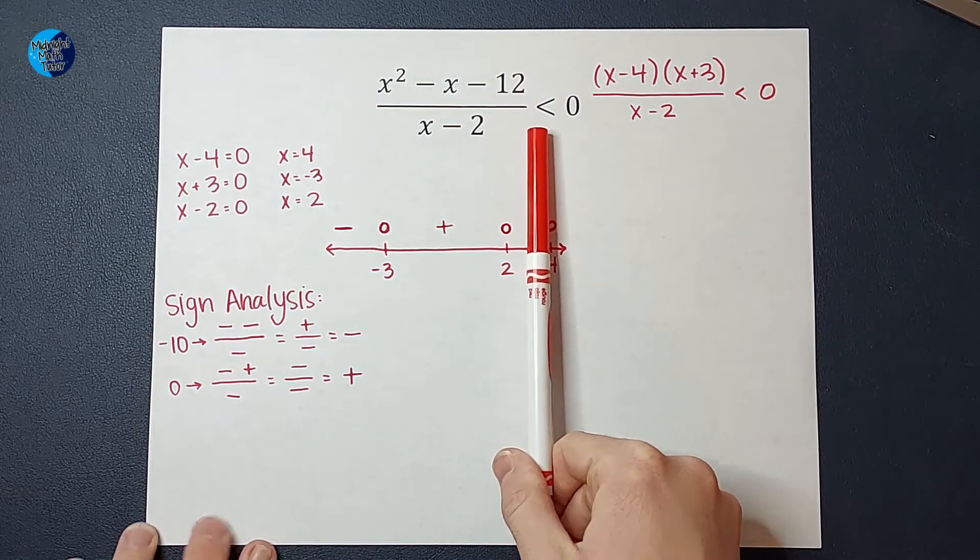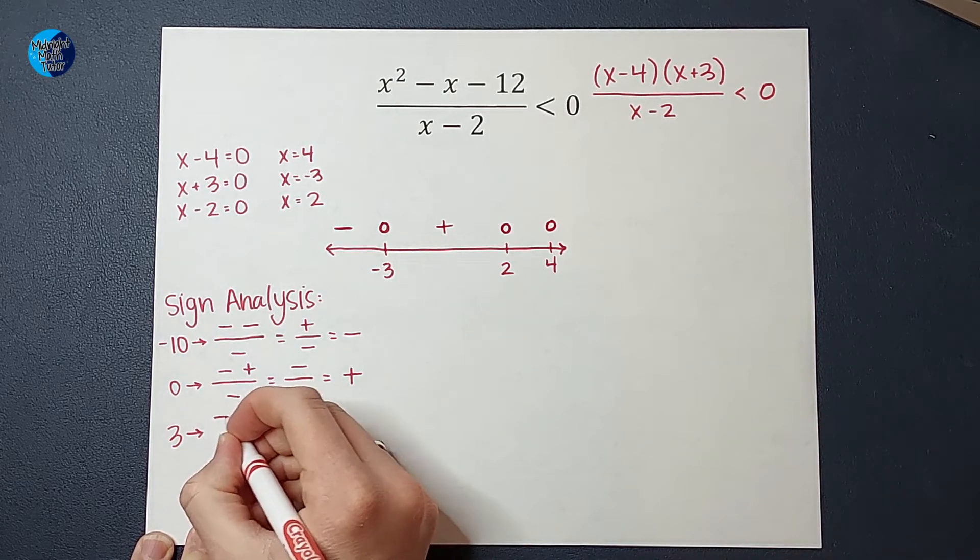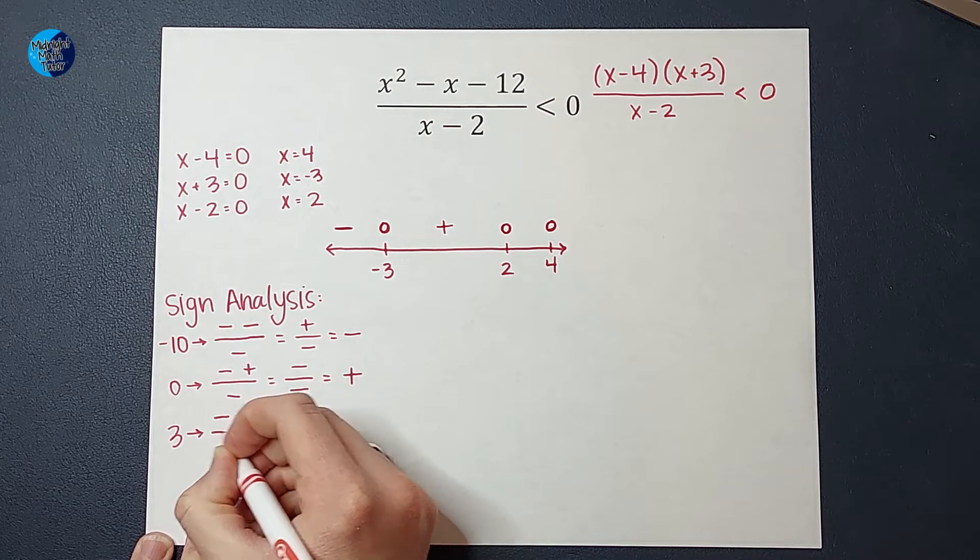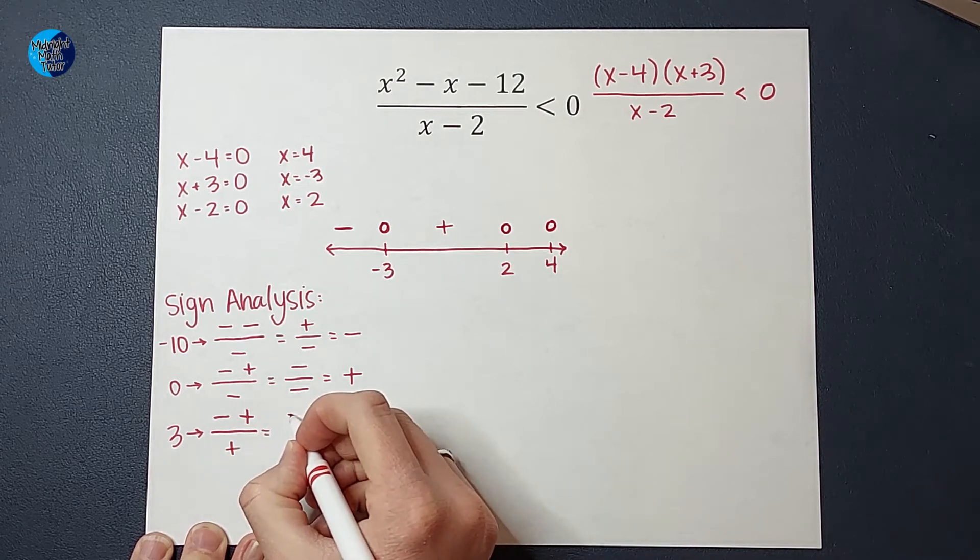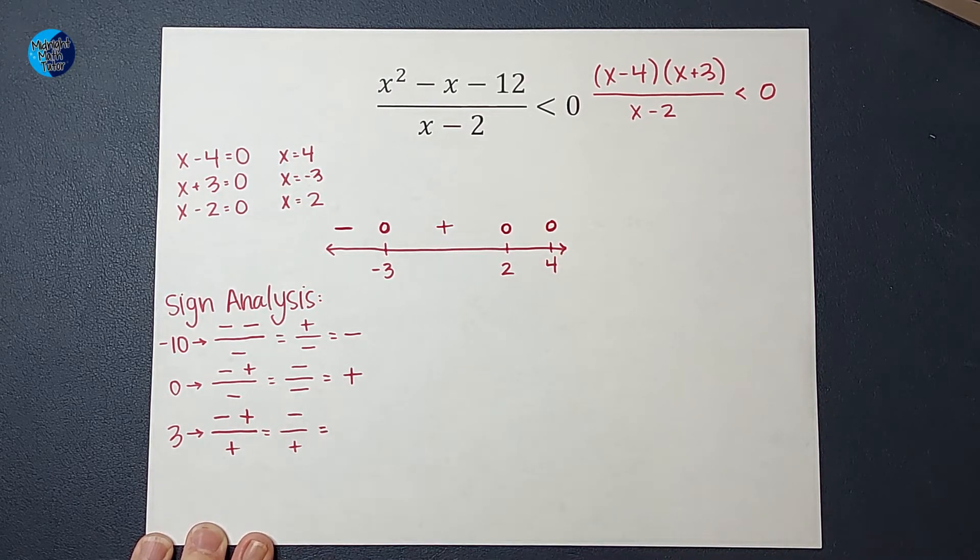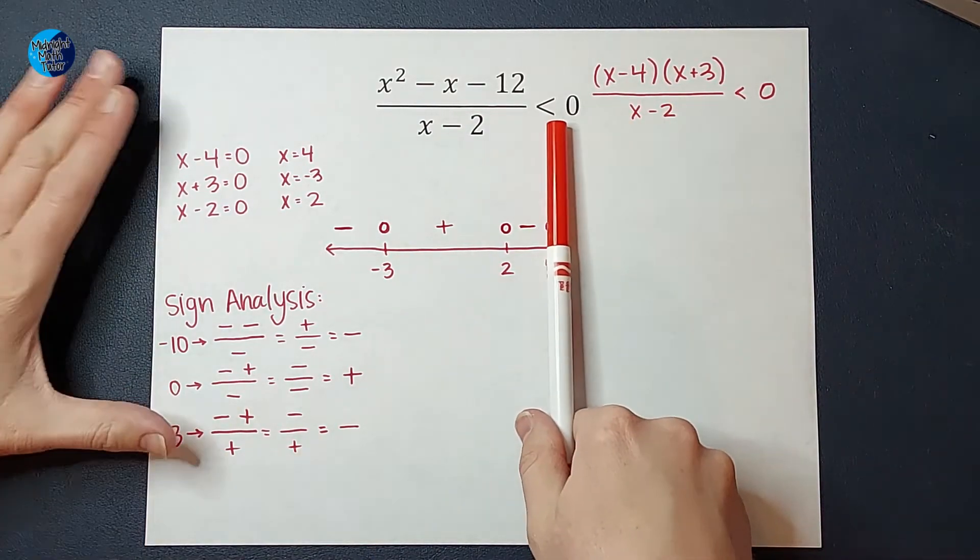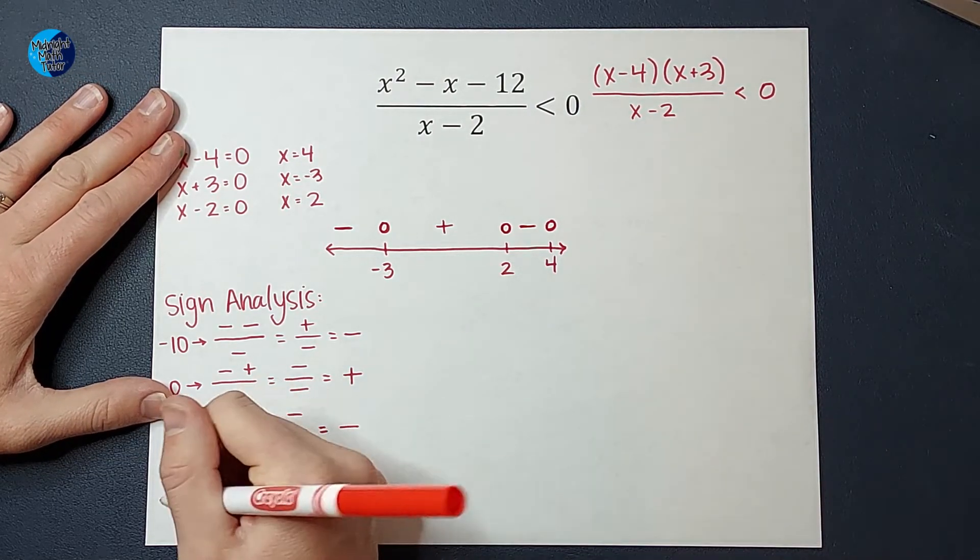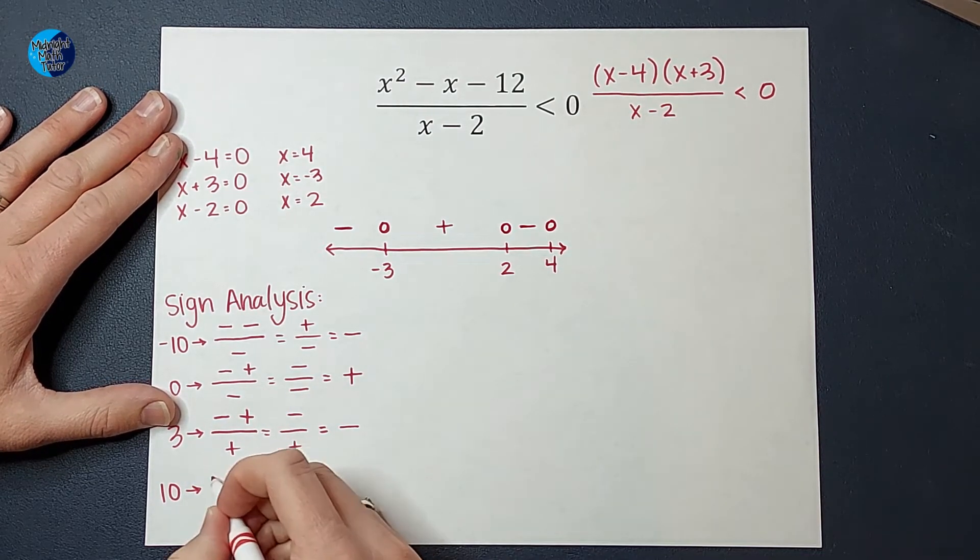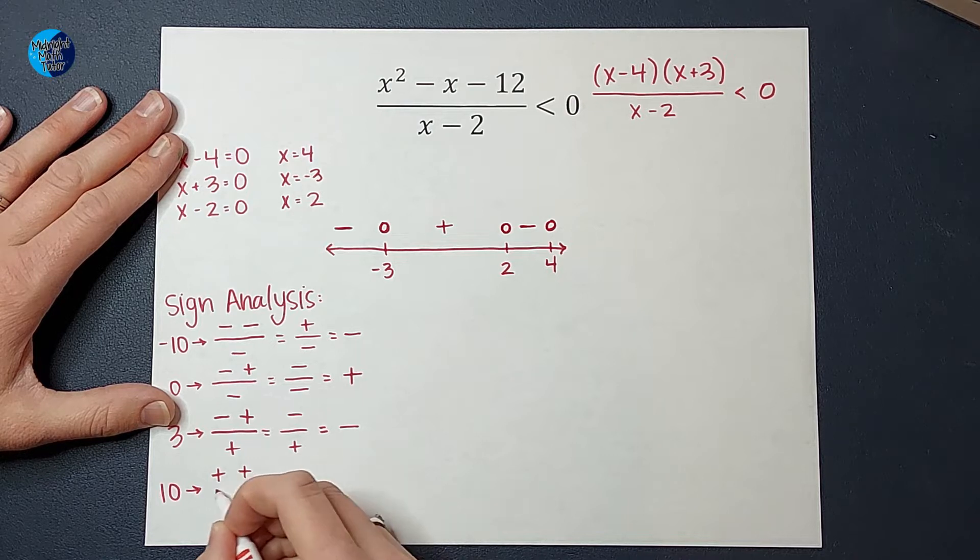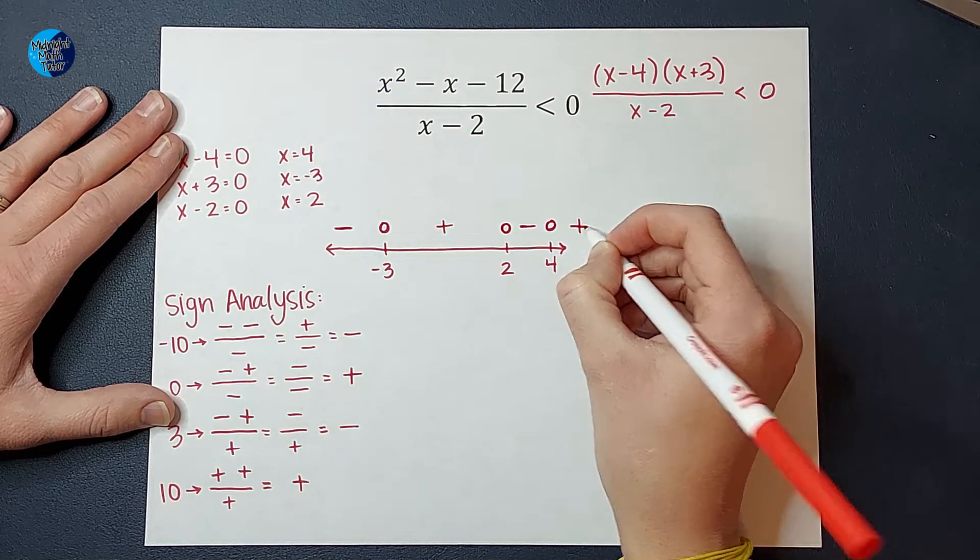Number between 2 and 4, let's pick 3. When I plug that in, 3 - 4 would give me a negative. 3 + 3, positive. And on bottom, 3 - 2 would be a positive. Negative times a positive is negative, and positive on bottom, negative divided by a positive is negative. Between 2 and 4 is negative. And then numbers bigger than 4, let's just pick 10. 10 - 4 would give me positive. 10 + 3, positive. Over 10 - 2 is positive. All those positives would end up being positive.